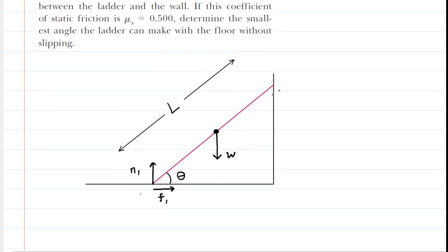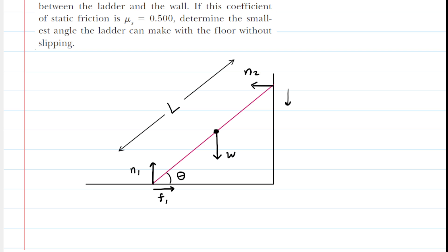Now let's look at the point of contact between the ladder and the wall. The ladder is pressing against the wall so the wall presses back — that's another normal force we will call N2. The ladder also has a tendency to slide down the wall, but static friction opposing that prevents it, pointing up, and we call that static friction force F2.